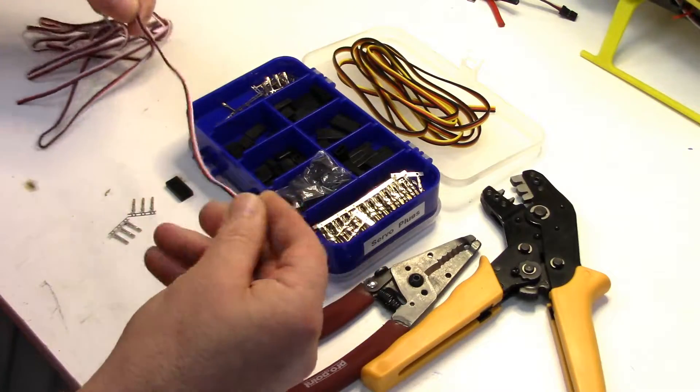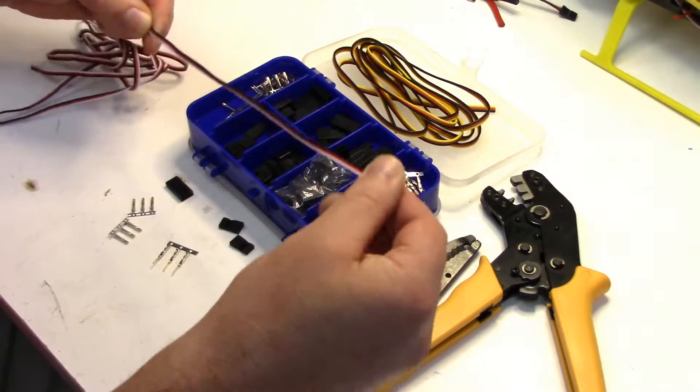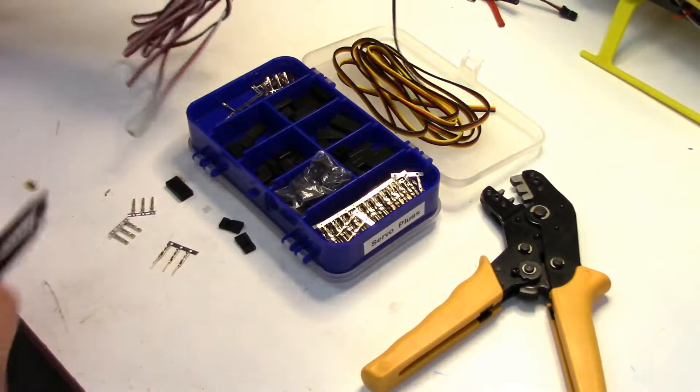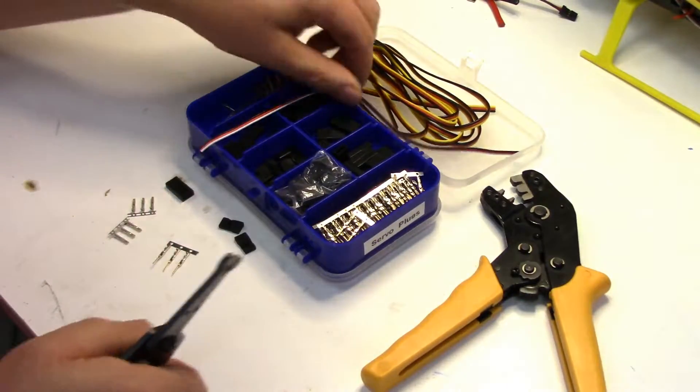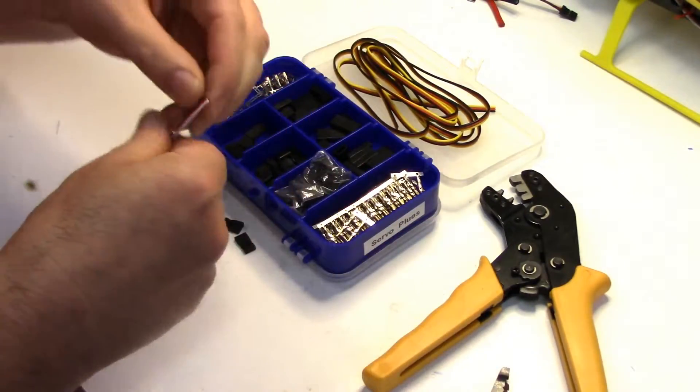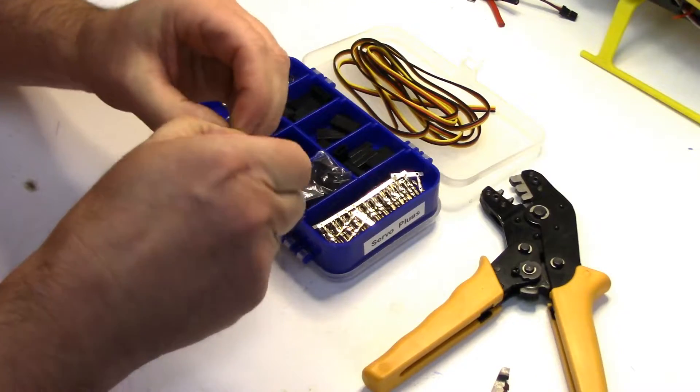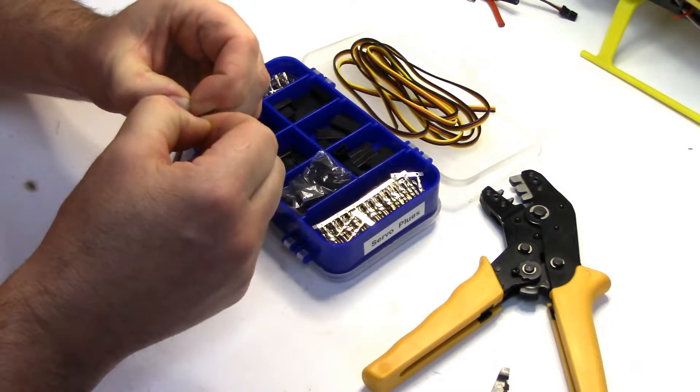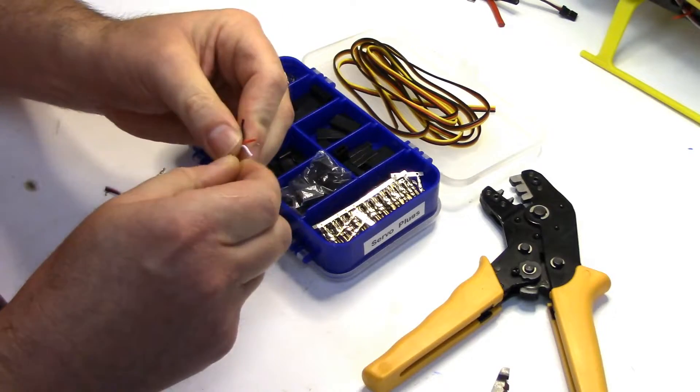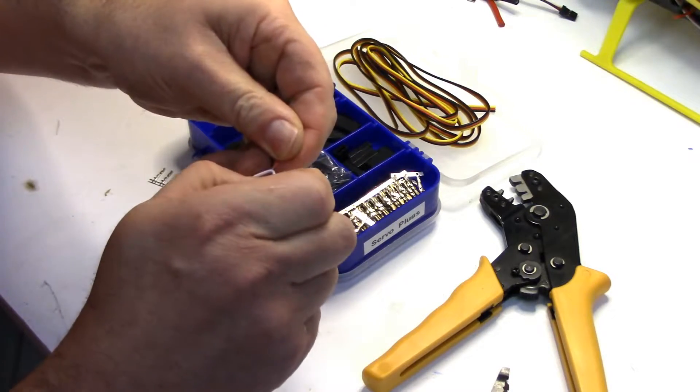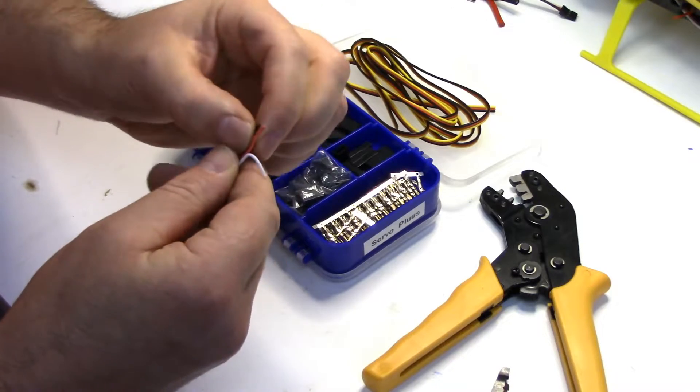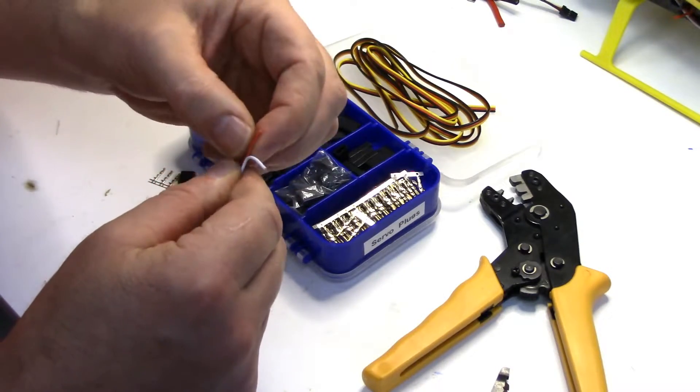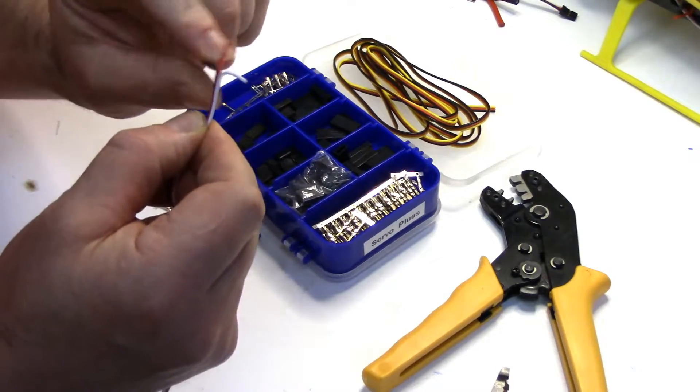So let's just make an extension here. I don't know how long we should make it. Let's just make a foot or so. So to do these you just pull the wiring apart, a little ribbon wiring. Something like that. Maybe pull a centimeter, three quarters of an inch.